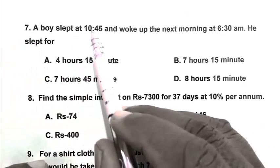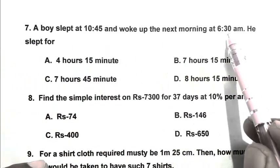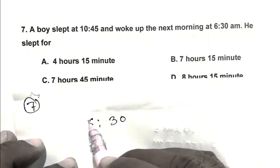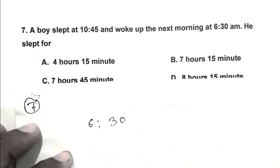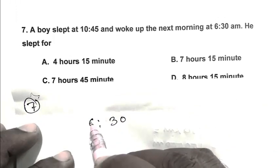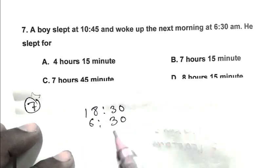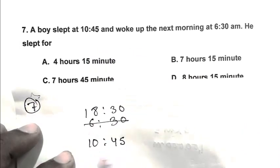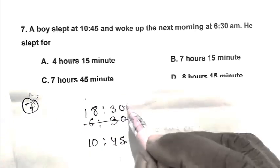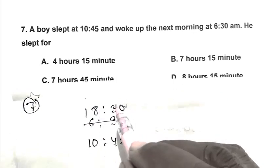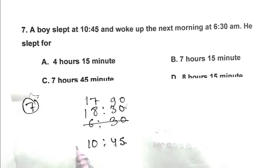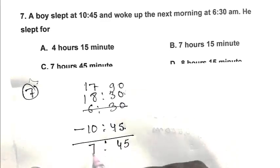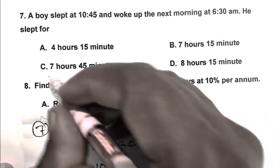Question number 7: A boy slept at 10:45 PM and woke up the next morning at 6:30 AM. During his sleeping, the time covered 12 o'clock midnight. So friend, we have to add 12 hours, so it becomes 18:30. The boy slept at 10:45 PM. Since 45 minutes is greater than 30, we take 1 hour to the minutes side, making it 90 minutes and 17 hours. Subtracting, we get 7 hours 45 minutes. C is the right answer.